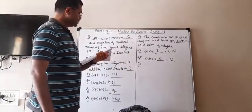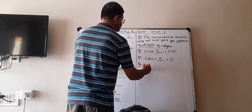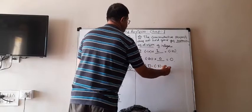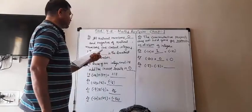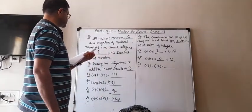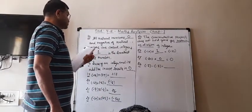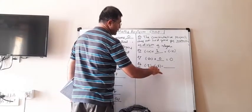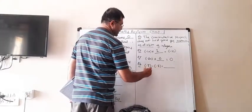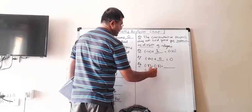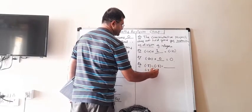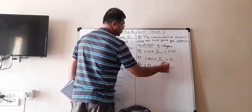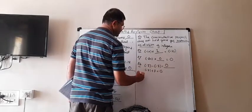Blank 26: (-7) - (-7) = blank. Minus minus becomes plus, so -7 - (-7) = -7 + 7 = 0. The answer is 0.